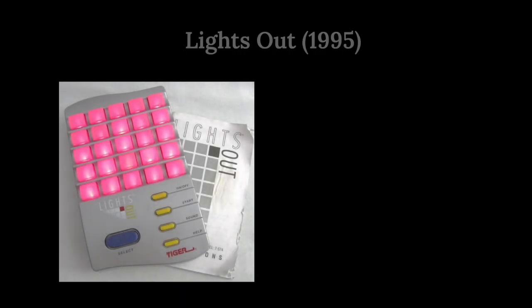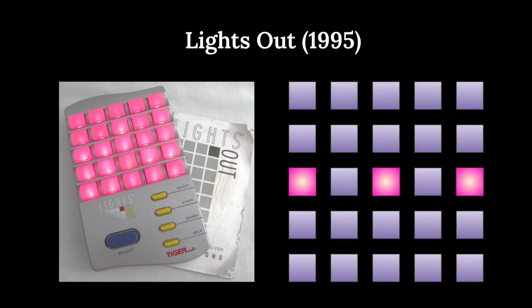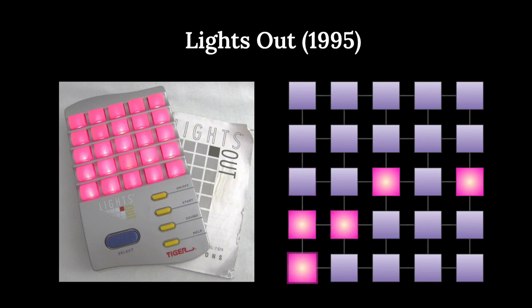If you're a bit older than you'd like to admit, you probably remember this thing - the original Lights Out game from 1995. Basically a grid of buttons and some initial light pattern, connected up, down, left, right. Anytime you press a button, it switches the light for that button and all the neighboring buttons.